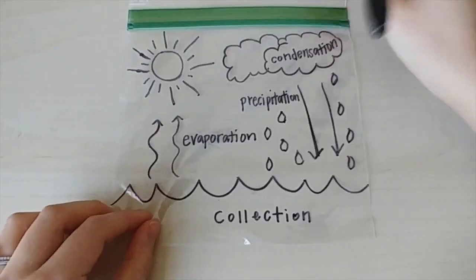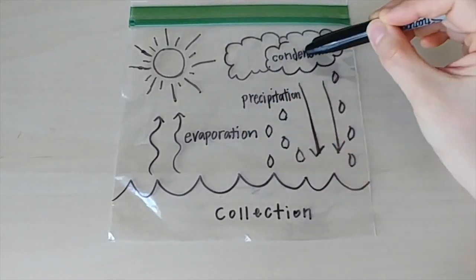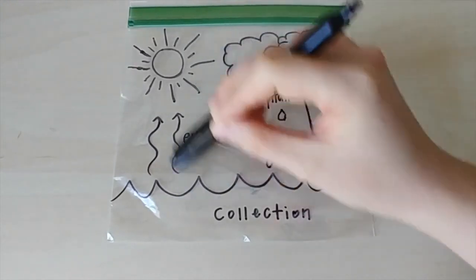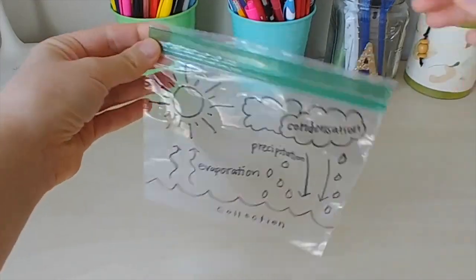And there we have it. We have completed our drawing of collection, evaporation, condensation, and precipitation which will continue to cycle over and over again to represent how water cycles on earth.